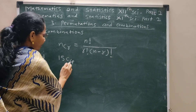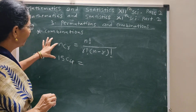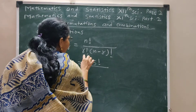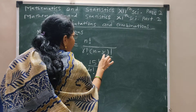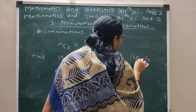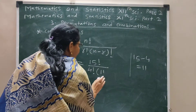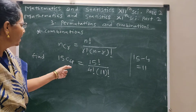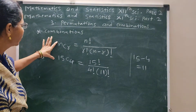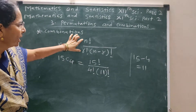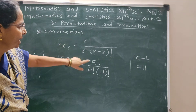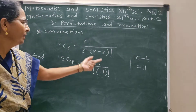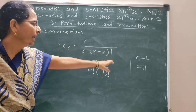For the question, find 15C4. Compare: N is 15, R is 4. So N minus R is 15 minus 4, which is 11. Write the values of N and R, then take the direct difference: N minus R equals 15 minus 4 equals 11. Don't forget the factorial sign.